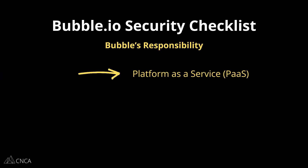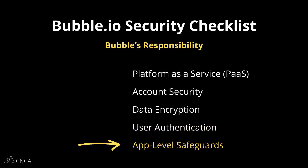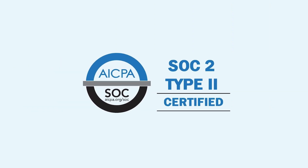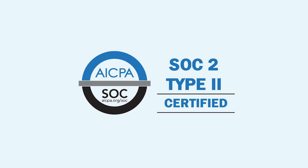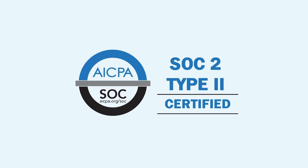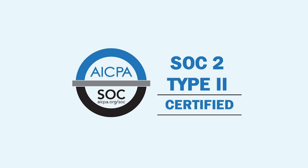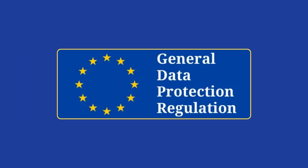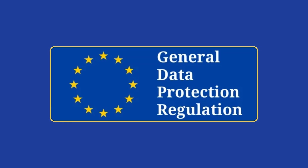Let's break down which areas of security Bubble is responsible for and which areas are fully up to you. Bubble is responsible for providing and maintaining a platform for you to build and deploy your app. To keep your data and apps safe, Bubble manages account security, data encryption, user authentication, and application-level safeguards to keep apps online and protected from cyber attacks.